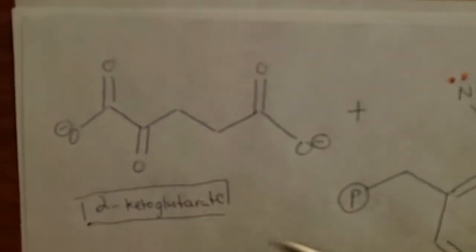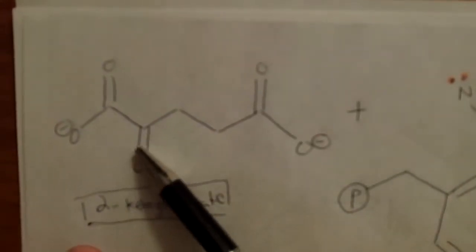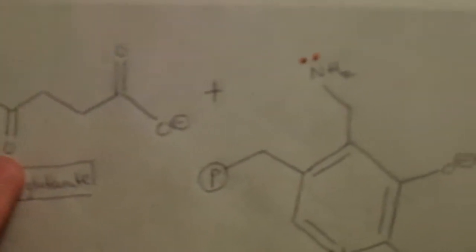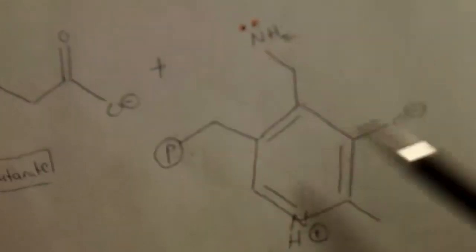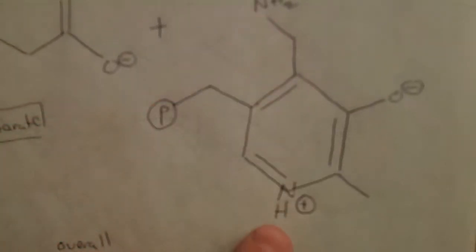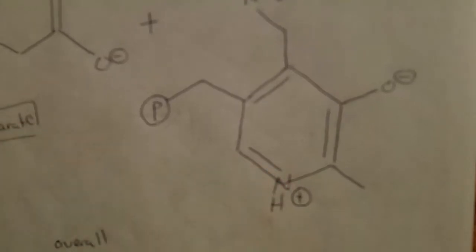Overall what we did: we formed alpha-ketoglutarate, the water came in and became this carbonyl group, the oxygen, and then we got this pyridoxamine. Because of that protonation there, these electrons are now isolated from the electron sink. So now this is ready to attack on some sort of pre-serine adduct.